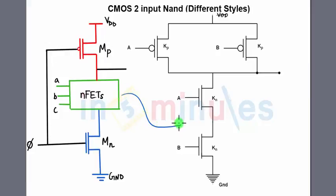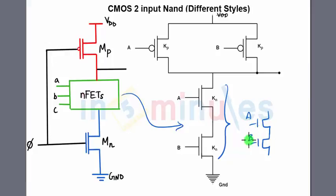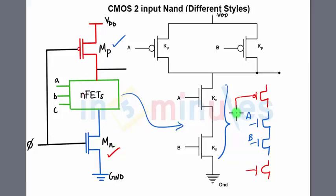Let's quickly do a two-input NAND gate using dynamic style. In dynamic style, the NFET logic remains the same as static CMOS — transistor A in series with transistor B. We also need a header transistor, which is a PMOS, and a footer transistor, which is an NMOS. Both of them are shorted and given a signal called Phi.